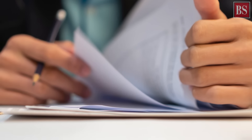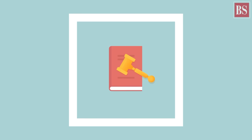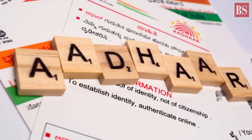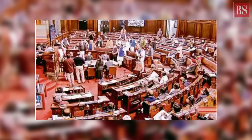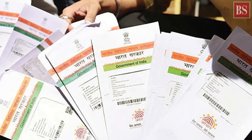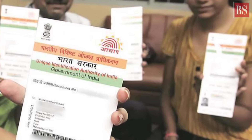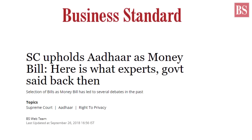Let us understand this through an example. Before it turned into an Act in 2016, the Aadhaar Bill was introduced as a Money Bill in Lok Sabha, where it easily sailed through as BJP enjoyed a majority in the lower house of the Parliament. It also led to a row, as the opposition didn't agree with the government's classification of the Aadhaar Bill as a Money Bill, in which the Rajya Sabha has no power to veto. Then in 2018, a five-judge Supreme Court bench had held its constitutional validity.